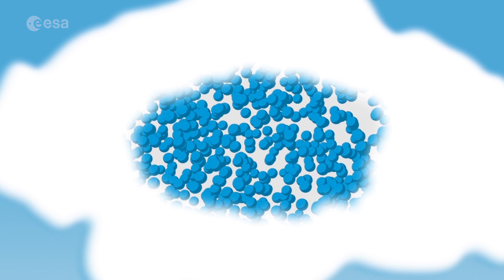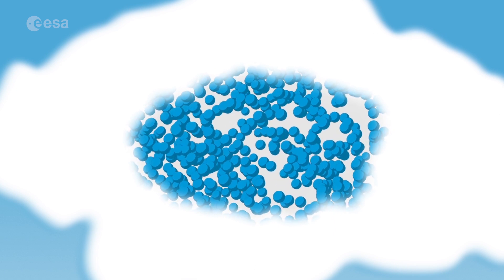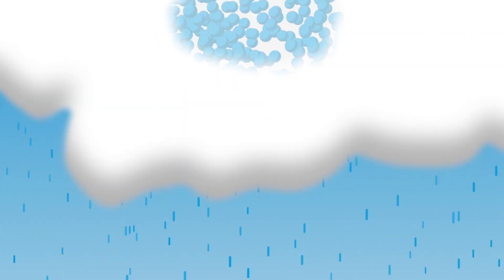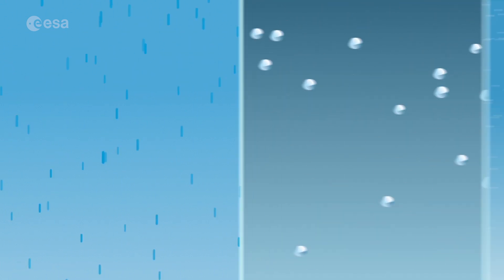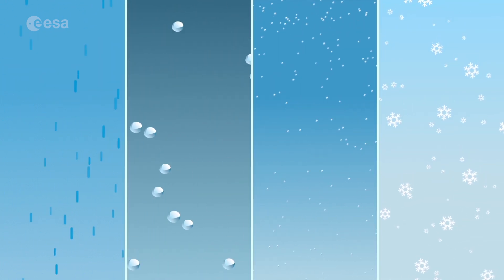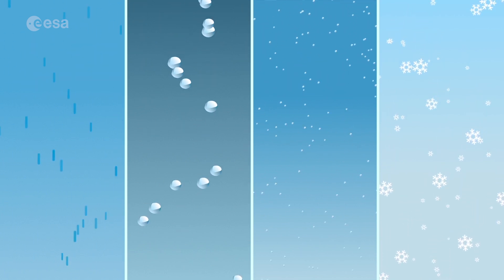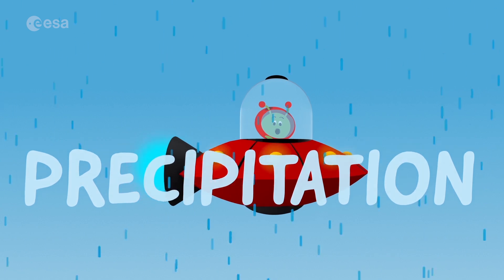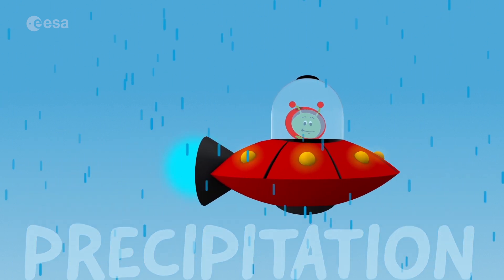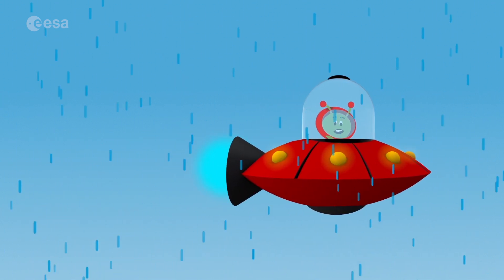When a lot of water has condensed, and the air cannot hold so many water droplets anymore, the water falls back to Earth. It can do this in different ways: rain, hail, sleet or snow. This is what we call precipitation, which is not always very nice, especially when you want to play outside.